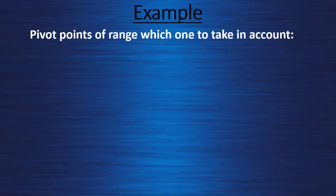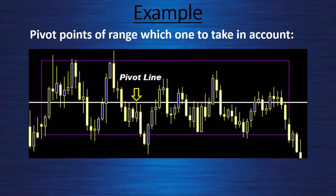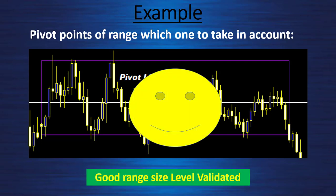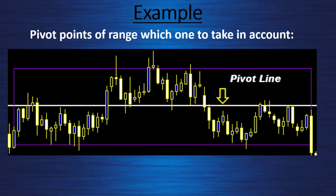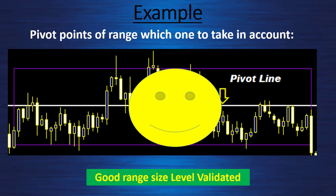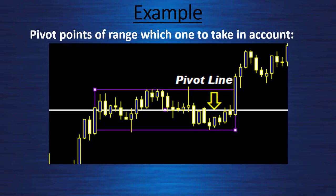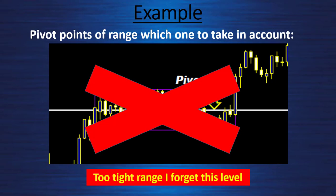Pivot point of range — which ones to take into account? In the first example, we have a very large range; the pivot point is perfect, showing strong rejection — I will take it into account because of the size of the range. Second example: the range is quite good in size, the pivot line is in the middle, we can see good rejection — obviously, we take this one into account too. Third example: we have a tighter range. We can see some rejection, but the price is really attracted and we have only one actually good rejection. Since the range is very tight, I will not take this one into account.